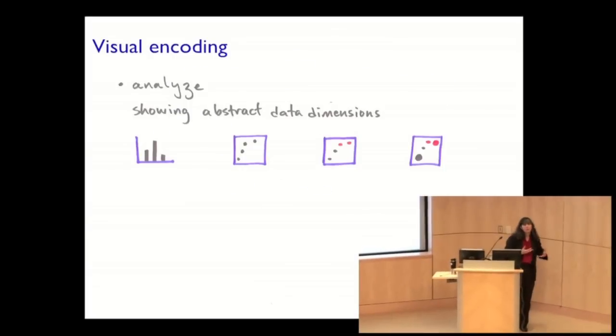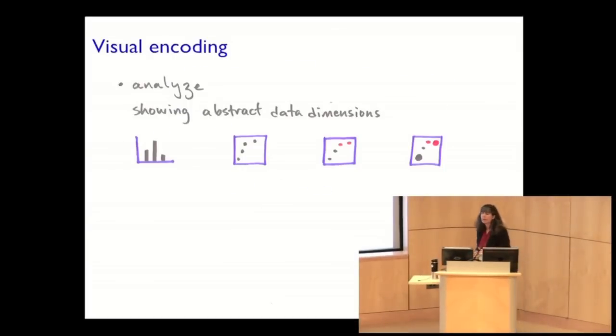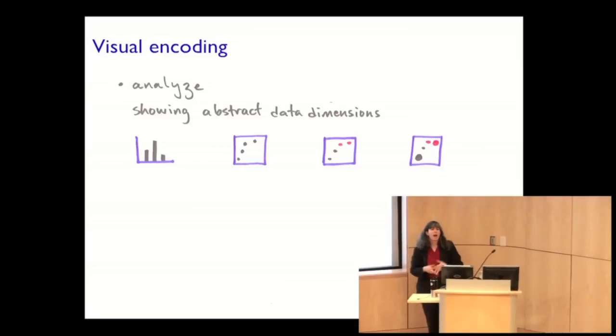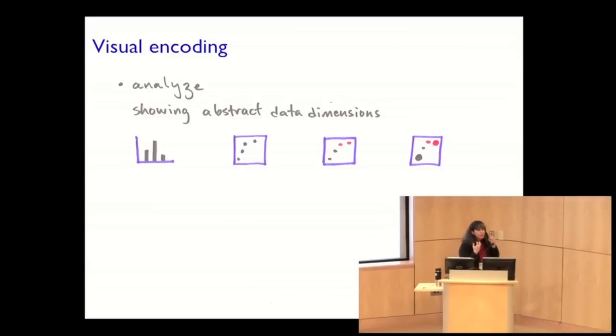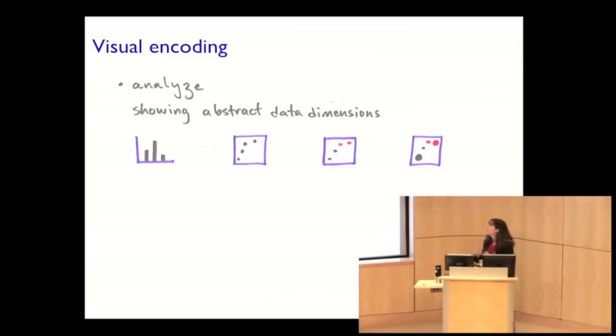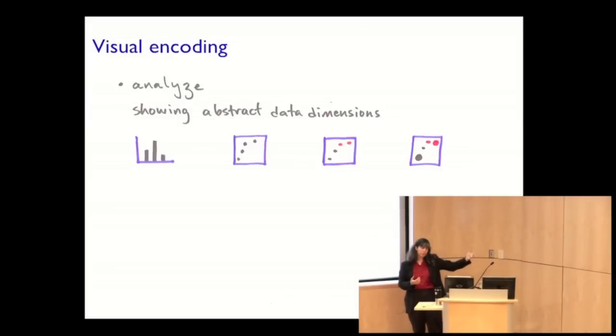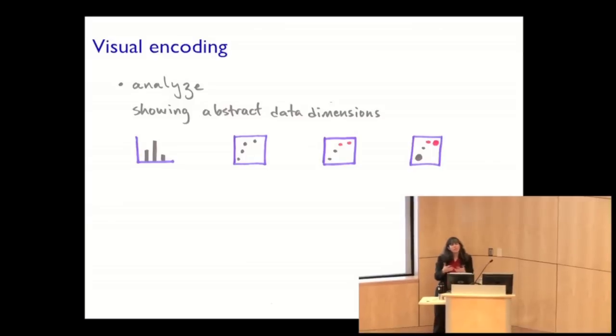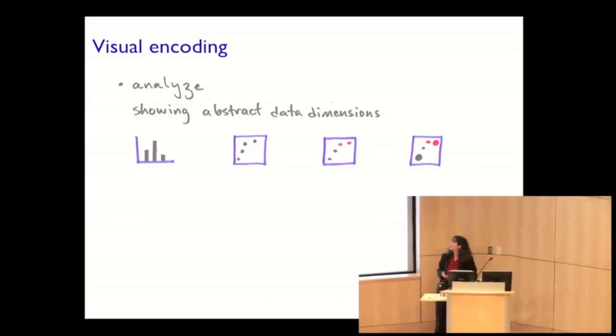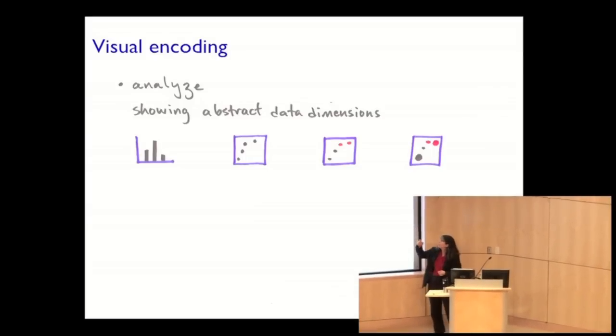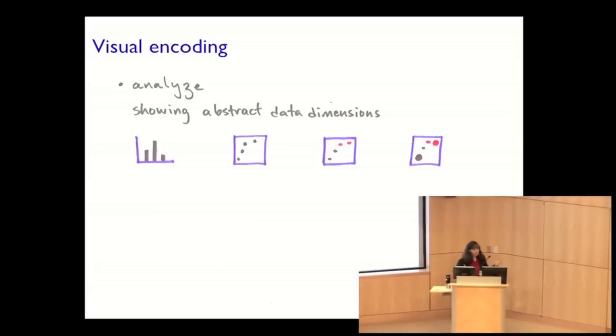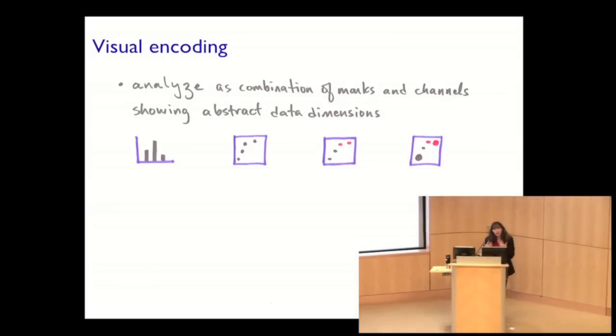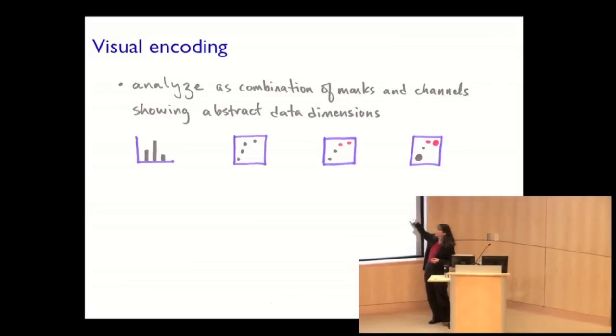All right. So having talked about data types, now let me leap into visual encoding. So here I'm showing you four different pictures, and I'd like to say, okay, let us analyze these pictures in terms of how we are showing some kind of abstract data dimension. So we've got data like I just talked about with data types. How many of these abstract dimensions could we actually encode in the picture? So we can stare at this a while. There might be a lot of ways we could think about this. I'm going to have us start to think about analyzing this as a combination of what I'll call marks and channels.